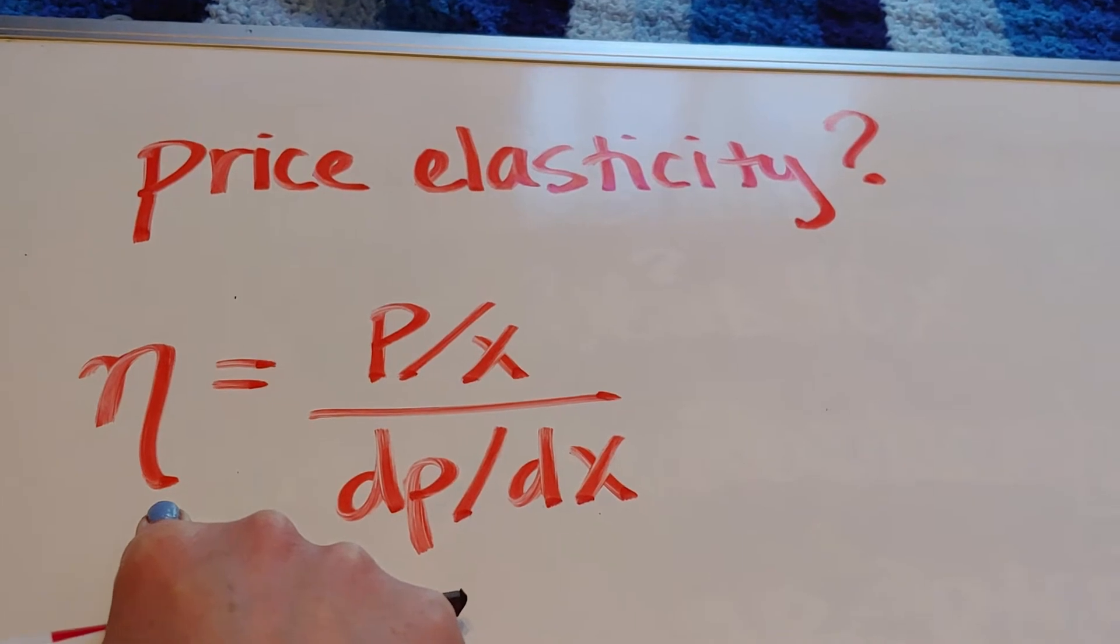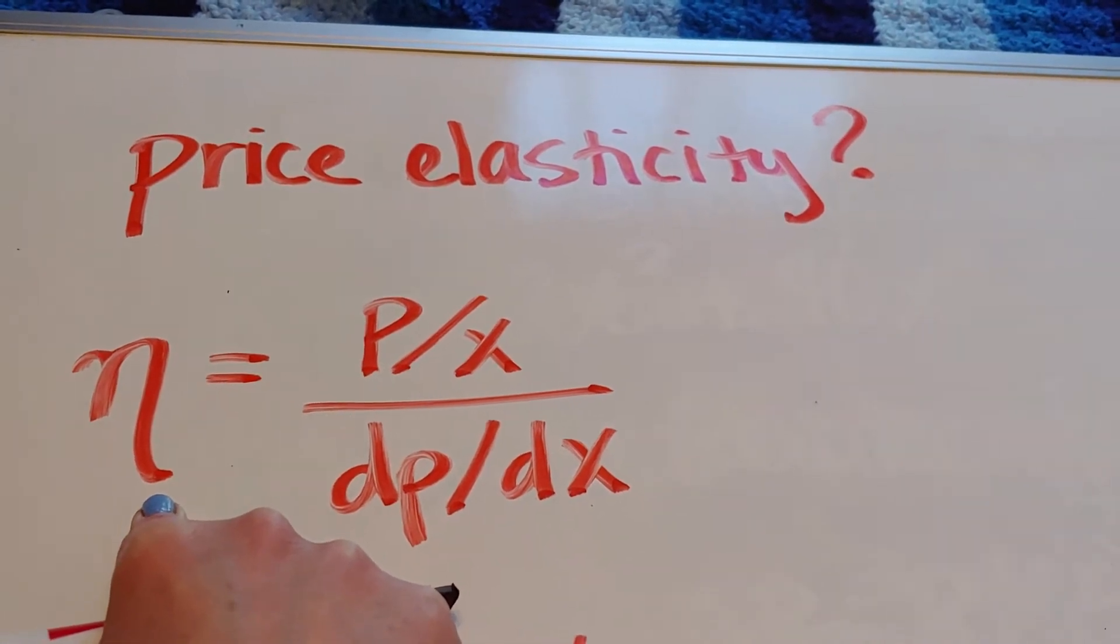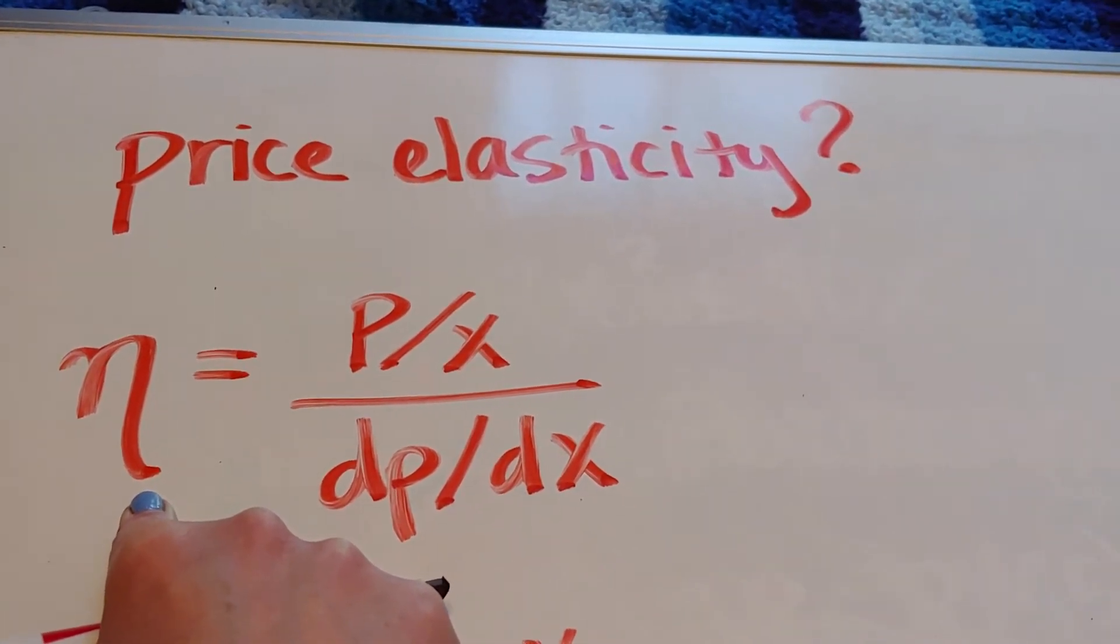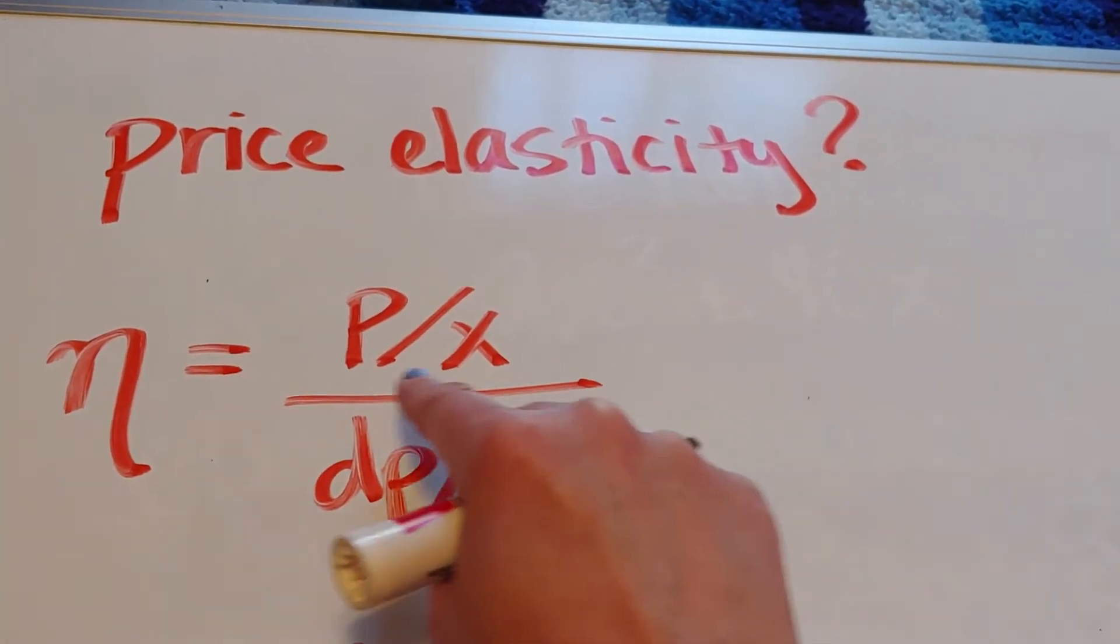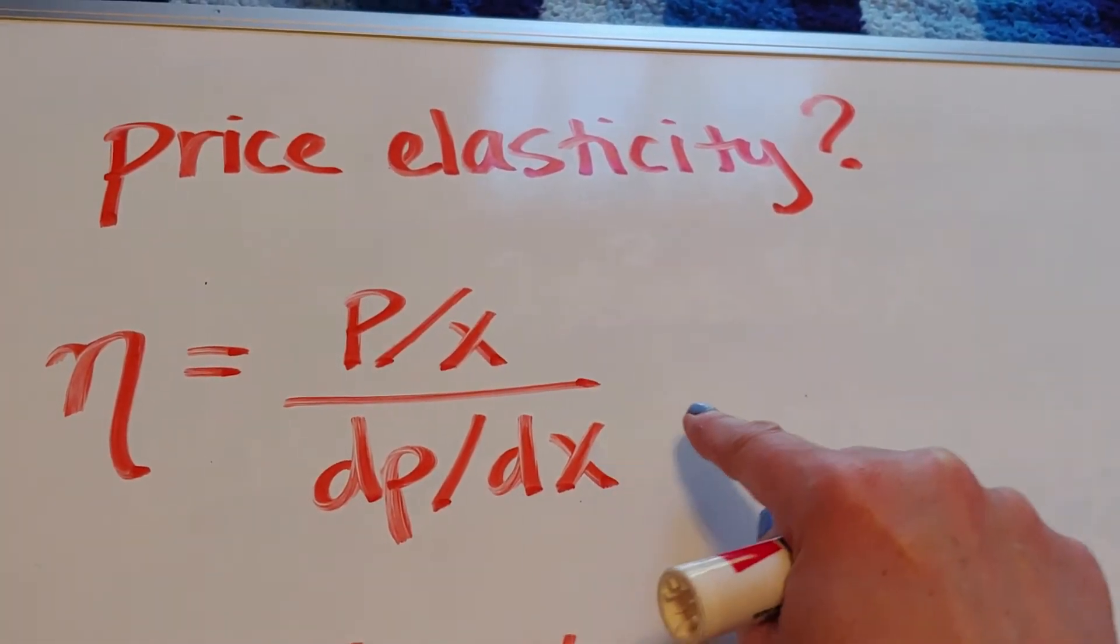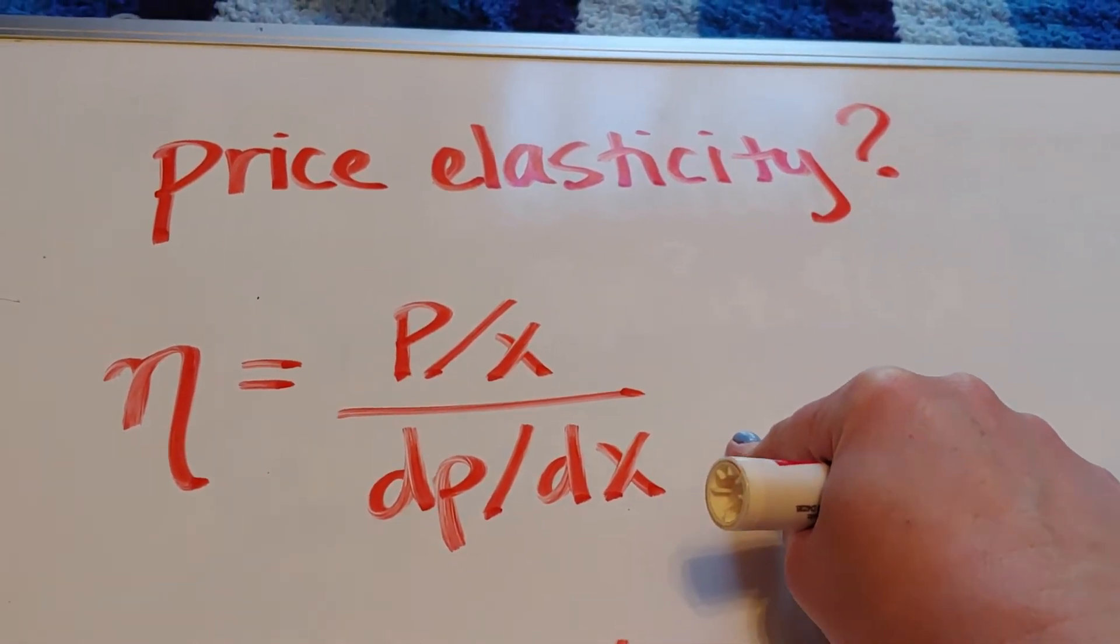And what we have to have is we have to be given our demand function p, and if we have a demand function p, we can build this p divided by x and then take the derivative of it and create this pretty funky equation to be honest.